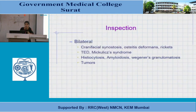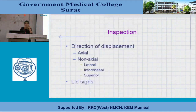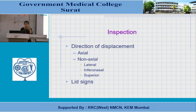Bilateral proptosis occurs in bony malformations like craniofacial synostosis, Paget's disease, or rickets. Leukemia and lymphoma can also cause bilateral proptosis. We then assess whether it is axial or abaxial proptosis. Axial proptosis means the swelling is inside the intraconal compartment — arising from the optic nerve — causing straight forward bulging. Causes include optic nerve glioma, meningioma, neurofibroma, and hydatid cysts.